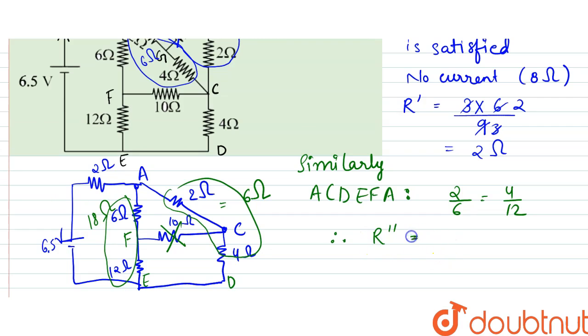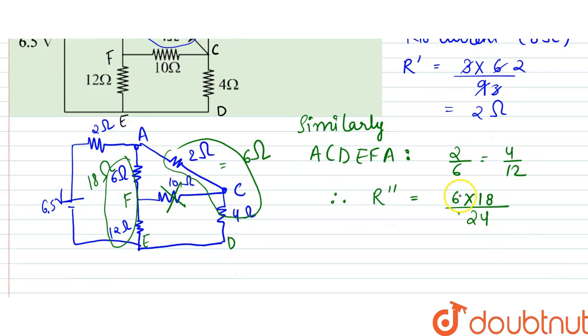So R double dash from here. The equivalence between A and E. We can write that to be equal to 6 into 18 since they are in parallel, by 6 plus 18. That is 24. So that would be 4. So 9 divided by 2. So that is 4.5 ohms.